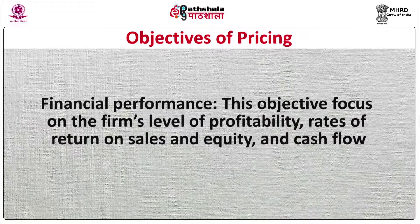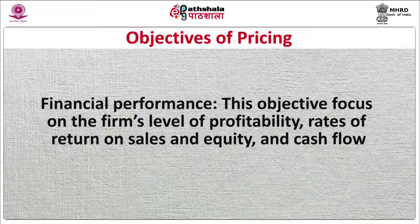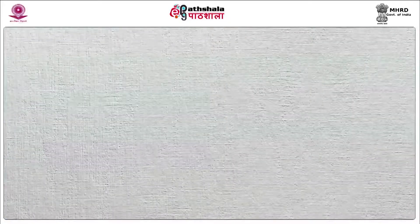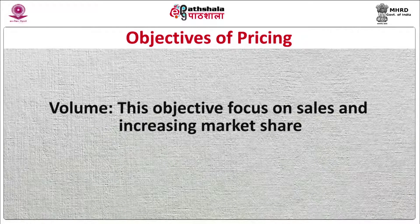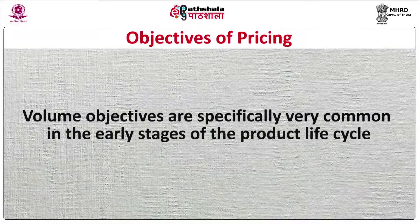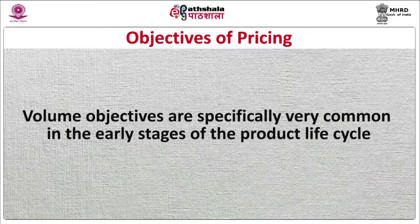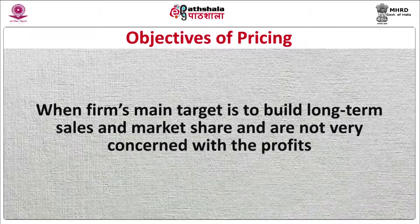Number two, Financial Performance. This objective focuses on the firm's level of profitability, rates of return on sales and equity, and cash flow. Most companies regularly monitor these performance measures and use them as benchmarks while deciding the price of their products or services. Number three, Volume. This objective focuses on sales and increasing market share, based either on number of units sold or amount of units sold. Volume objectives are especially common in the early stages of the product life cycle, when firms' main target is to build long-term sales and market share.